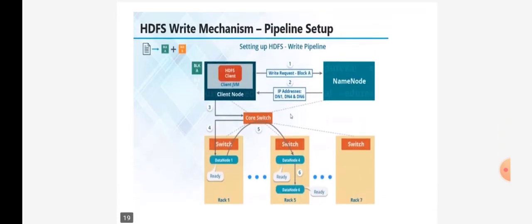If any problem occurs and the data nodes do not come into the ready state, the client node will again request the name node that the IP addresses provided are not working properly and are not in the ready state. So the name node will search for more available free IP addresses and provide them to the client node so that smooth processing can continue.